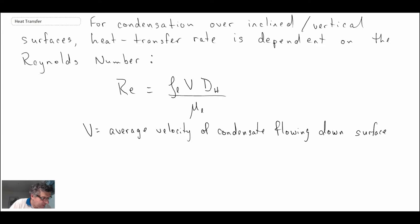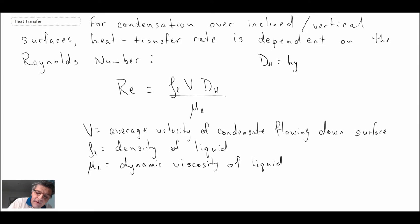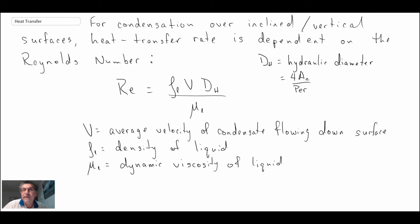V is the average velocity of the condensate flowing down the surface. Rho is the density of the liquid. Mu is the dynamic viscosity of the liquid. The hydraulic diameter dh is defined as four times the cross-sectional area AC divided by the perimeter — that would be the cross-sectional area perpendicular to the direction in which the film is moving, and that's going to depend upon the nature of the shape.